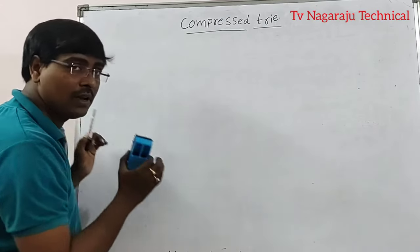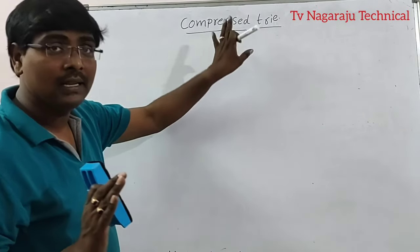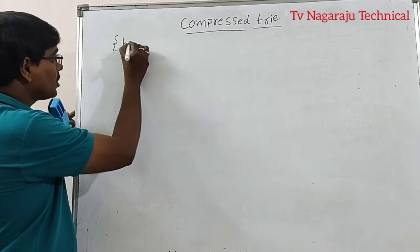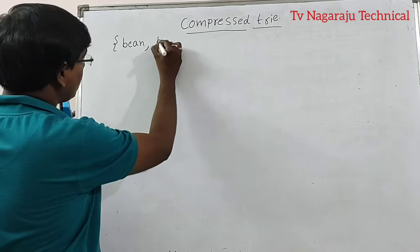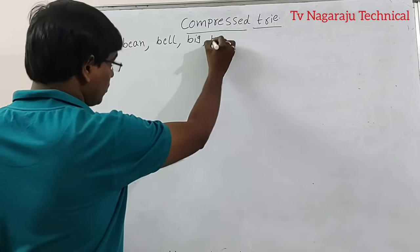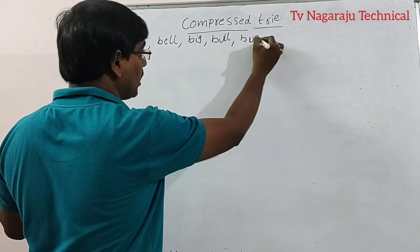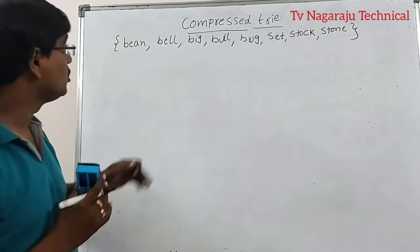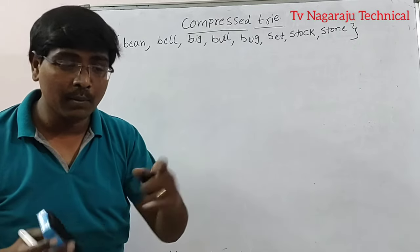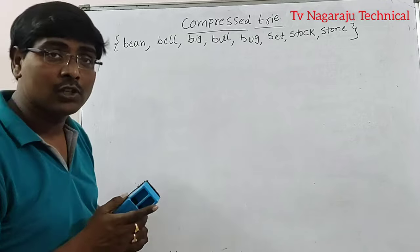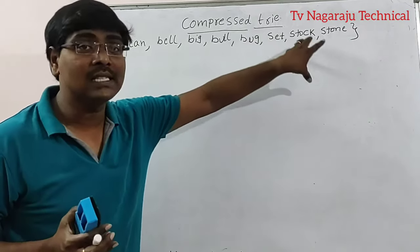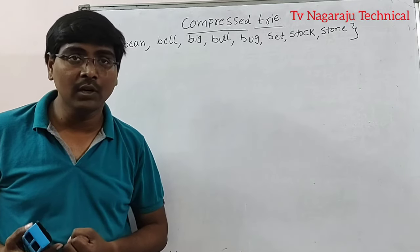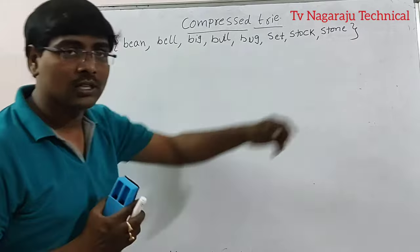This is the main advantage. I will take one example and explain the construction of the compressed trie. Consider the set of strings: bean, bell, big, bull, bug, set, stock, stone. The first thing you need to do is arrange the strings in sorted order — then the trie is easy to construct.